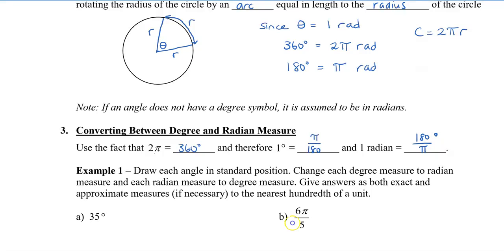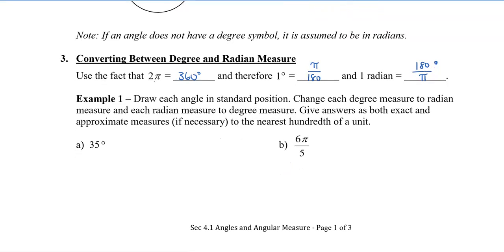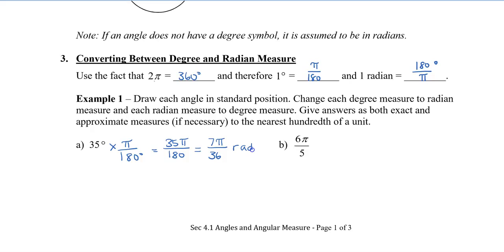Let's take a look at an example. Draw each angle in standard position, and practice by changing each degree measure to radian measure, or if it's in radians, change it to degrees. Give answers as both exact and approximate measures, if necessary, to the nearest hundredth. So, if I have 35 degrees, and we know that 1 degree equals π over 180, I multiply by π over 180 to get 35π over 180. Reducing by a factor of 5, I get 7π over 36 radians. According to my graph, 35 degrees will be in the first quadrant, so I put the angle there.